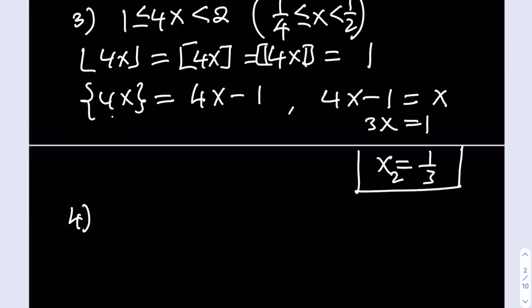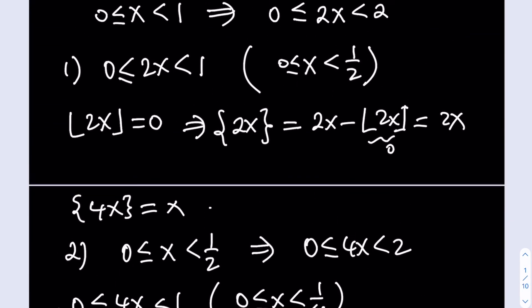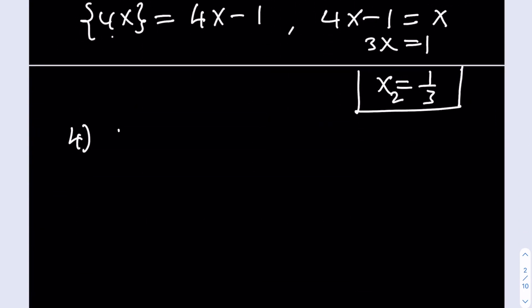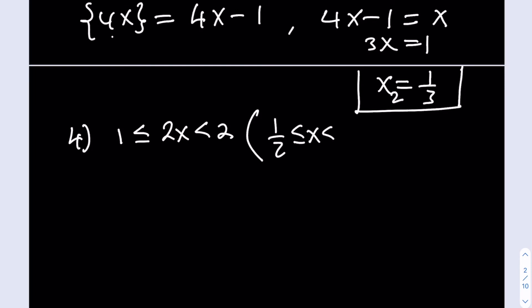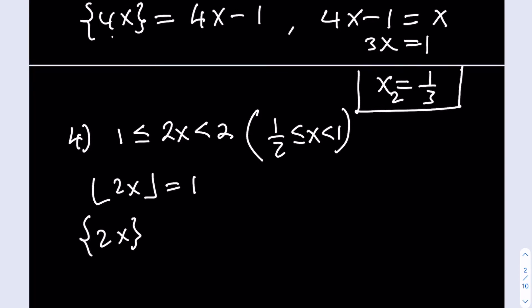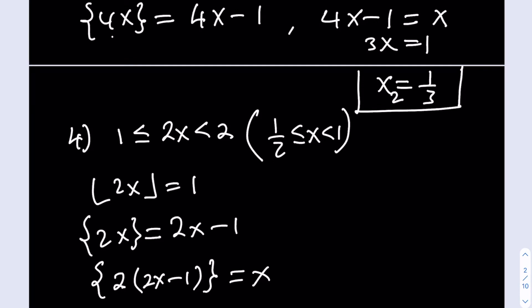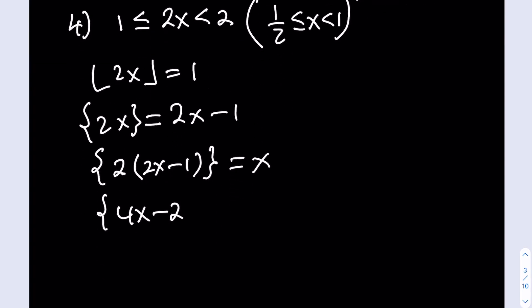Case 2: now we look at 2x between 1 and 2, meaning x is between 1/2 and 1. The floor value of 2x is 1, so the fractional part of 2x equals 2x minus 1. Substituting into our original equation gives us the fractional part of 2 times (2x minus 1), which is the fractional part of 4x minus 2, equal to x.